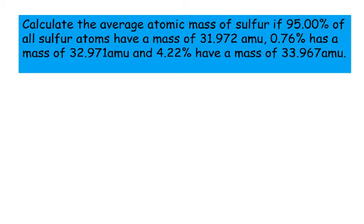And 4.22% have a mass of 33.967 atomic mass units. So unlike the previous question, this time we've got three different isotopes but it really is exactly the same technique.